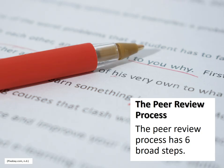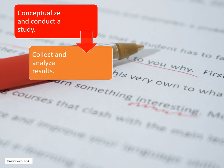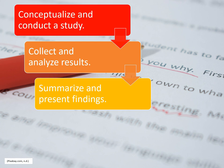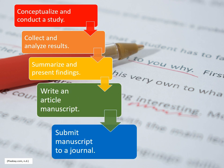The peer review process has six broad steps. The first is for an author to conceptualize and conduct a study within his or her field. The second is for them to collect and analyze the results of their study. Third, the author will summarize and present their findings. Fourth, they will write about their study in an article manuscript. For the fifth step, the author will submit a manuscript of their study to a journal for publication.